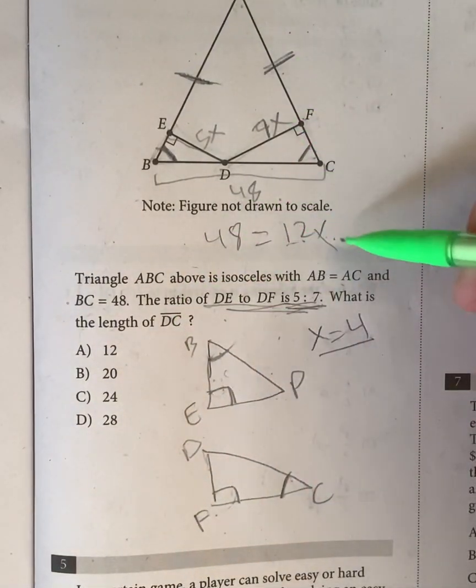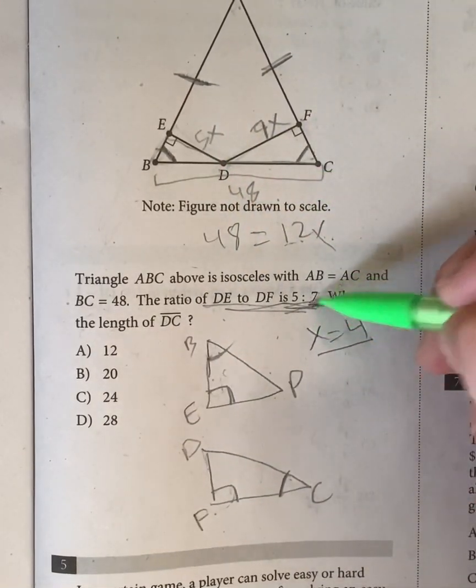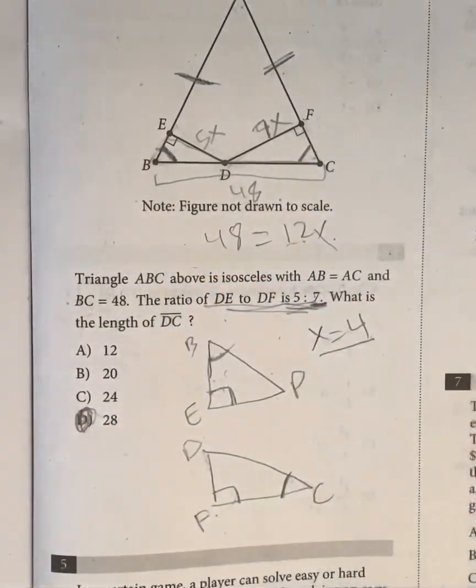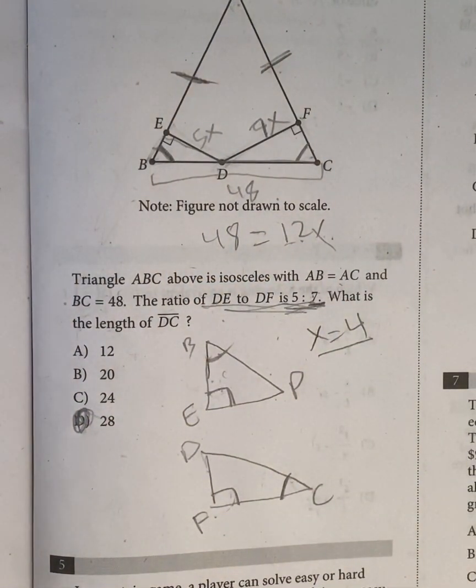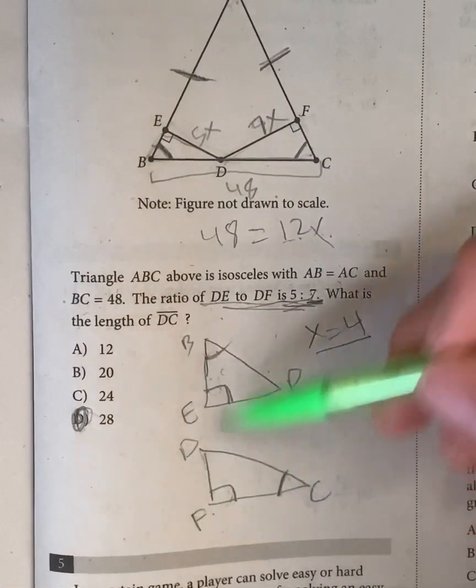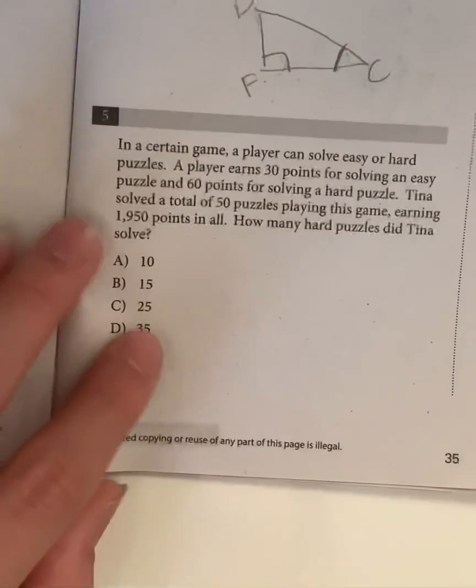And DC is equal to the 7 part, should be the longer part, 7 part. So that's 7 times 4, which is going to give us 28. So the key to this question is to use proper ratios, and then using common geometric properties. Okay, moving on. Let's go to question 5.